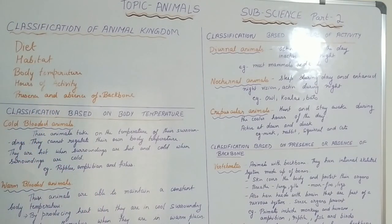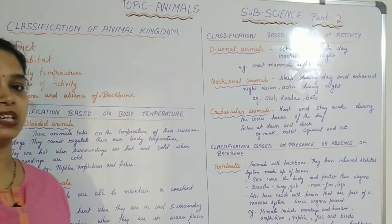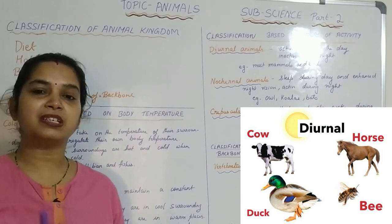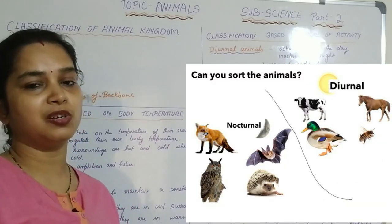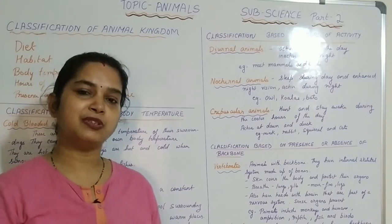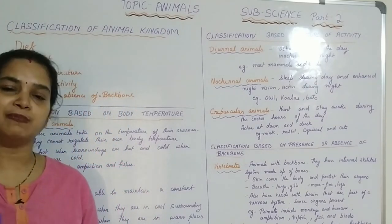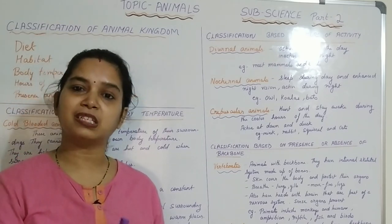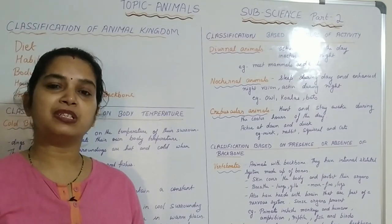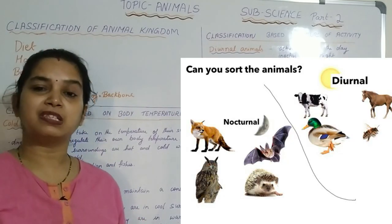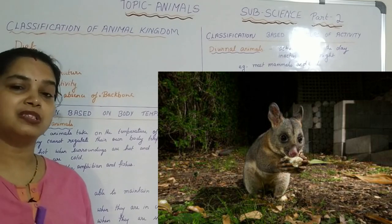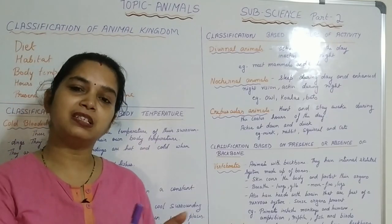Now we move on to the next classification of animals: the classification based on hours of activity. Hours of activity means at what time during the day, night, dusk, or dawn an animal is active. We are generally active during the daytime and sleep during the nighttime. Most animals do the same, but some animals like owls and bats are active during the nighttime. Other animals are active during the dusk and dawn — generally the cooler hours.